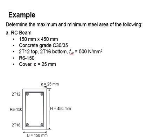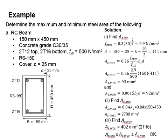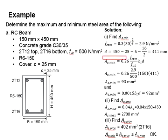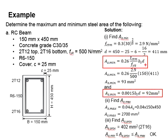You may pause the video to work out the solution. This is the solution for determining the maximum and minimum steel area. First, you need to find AS minimum. To determine AS minimum, there are two equations to refer to: the first is 0.26 × fctm / fyk × BD, and the second is 0.0015 BD.